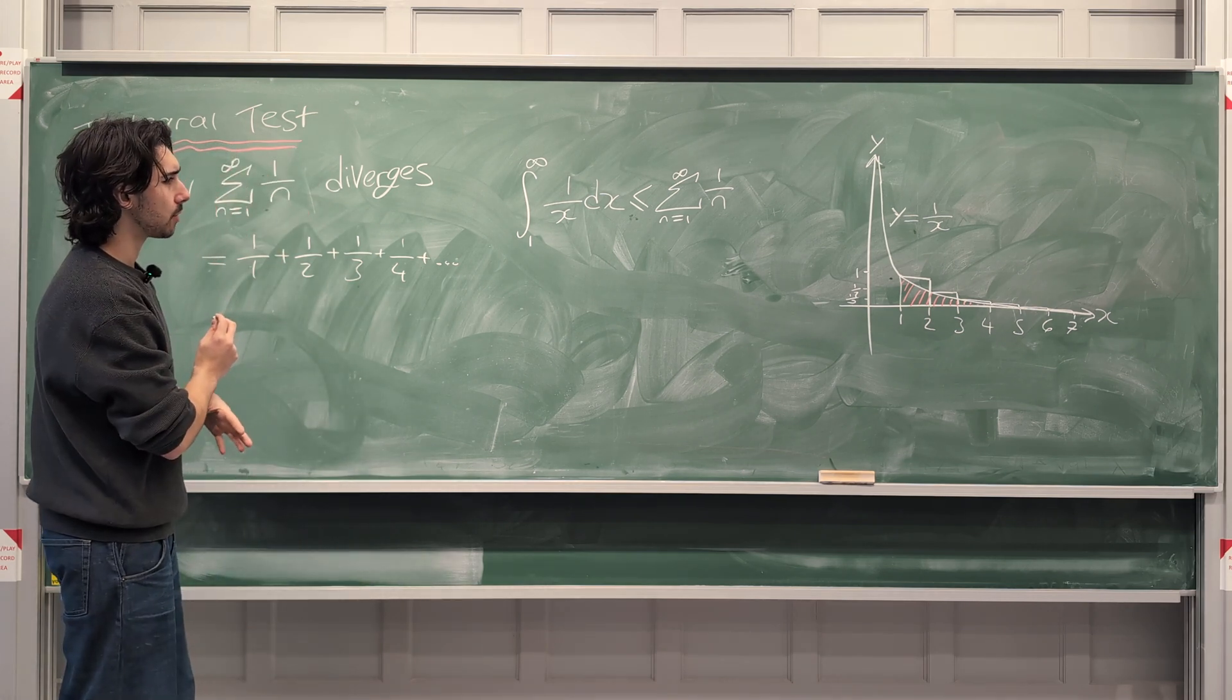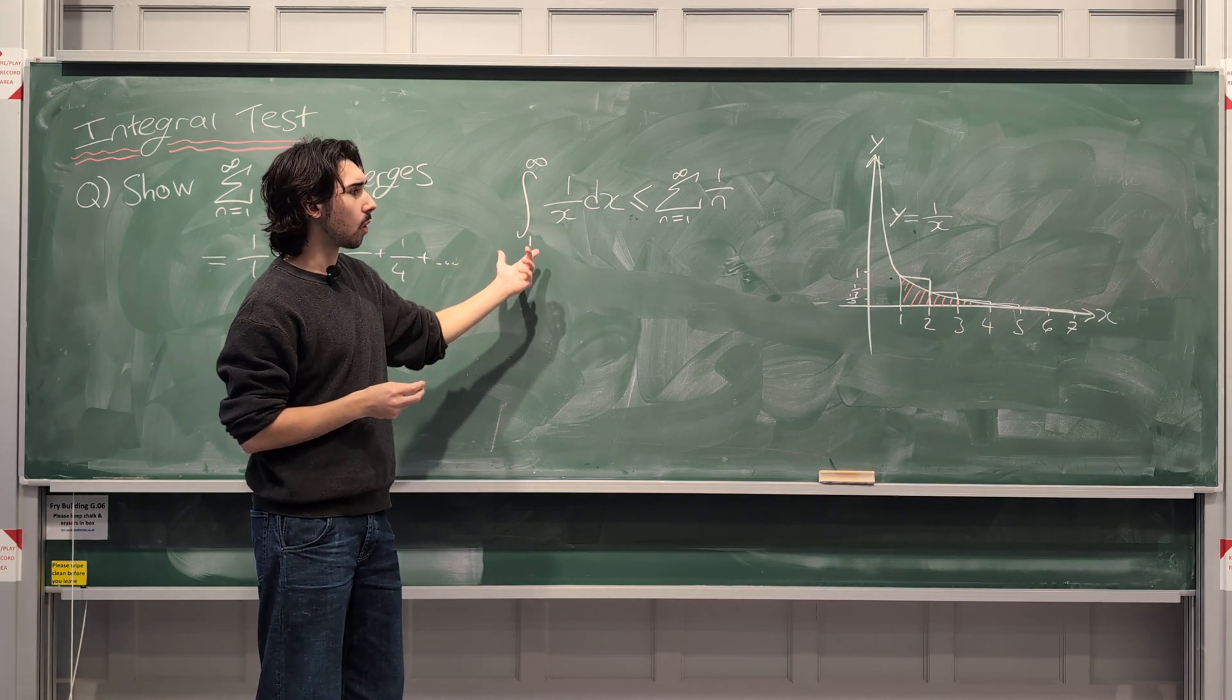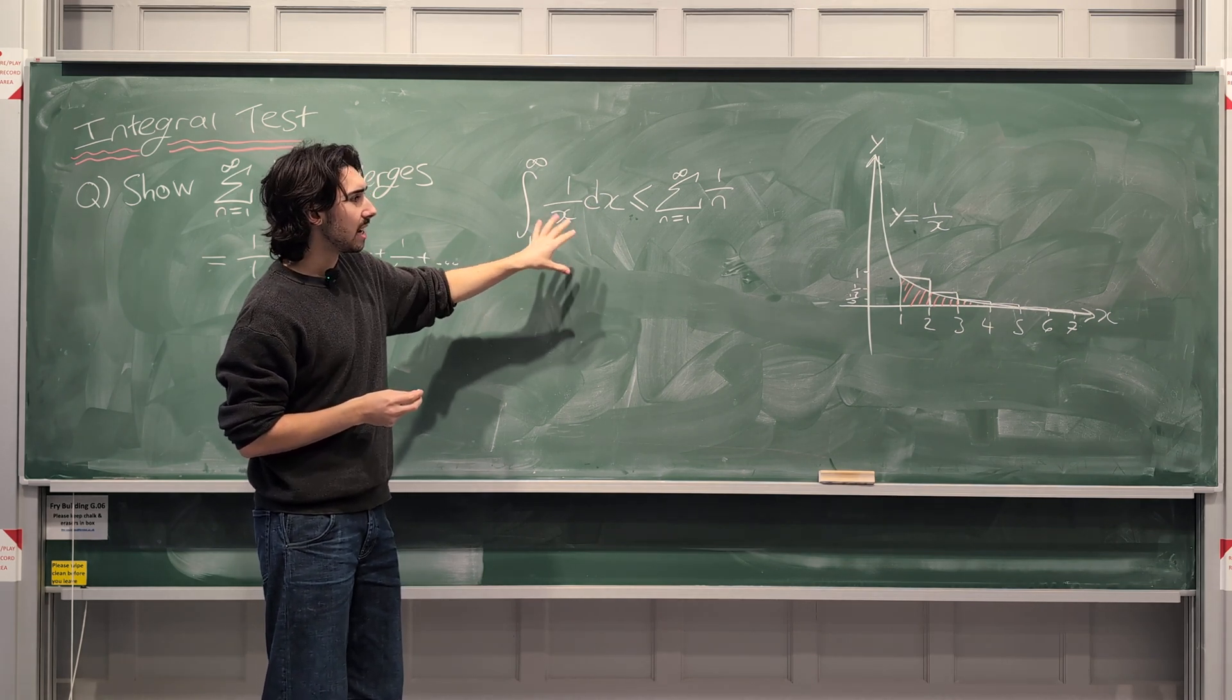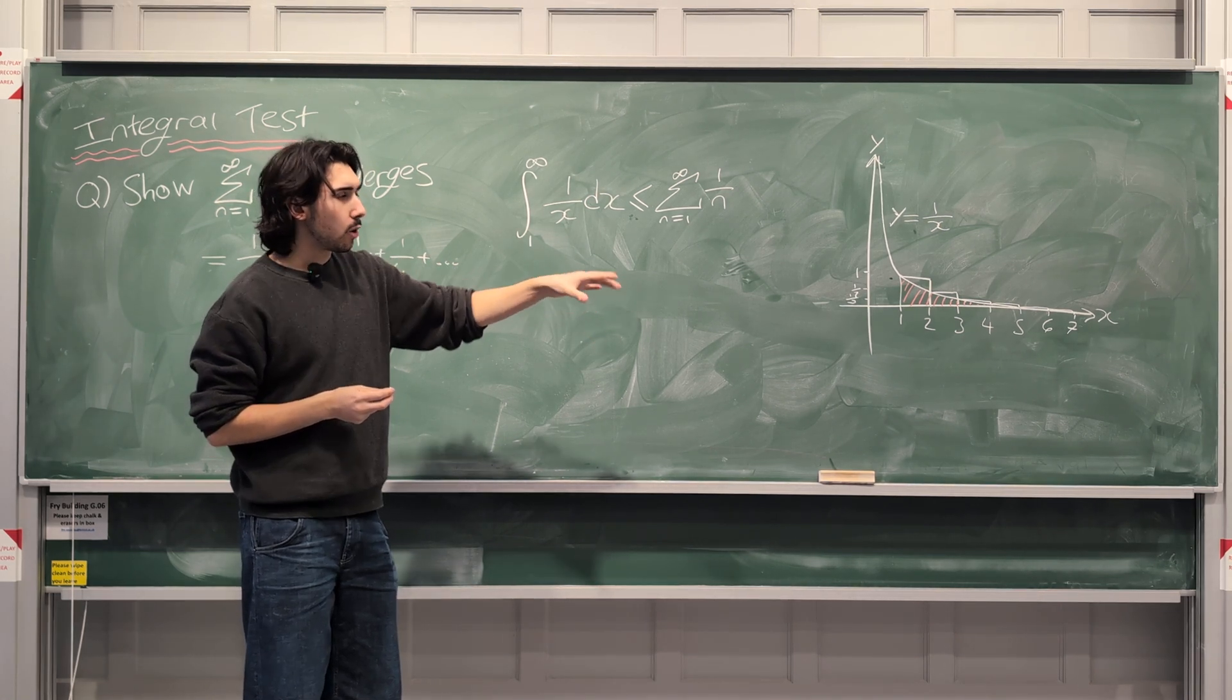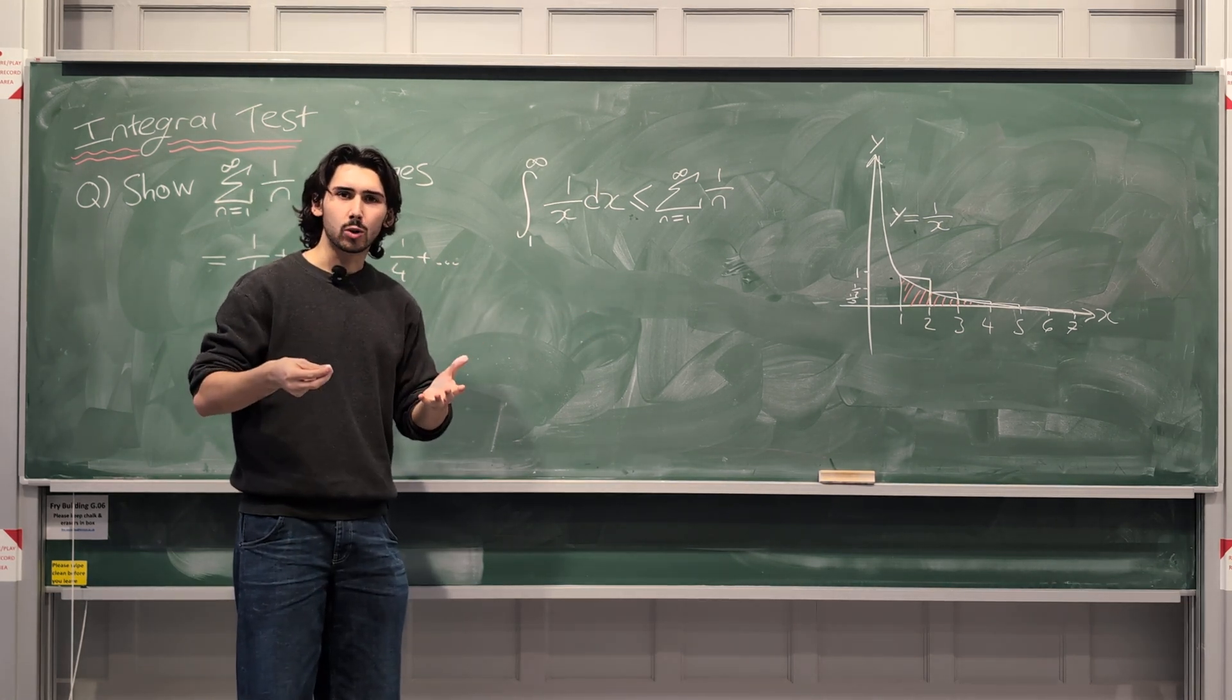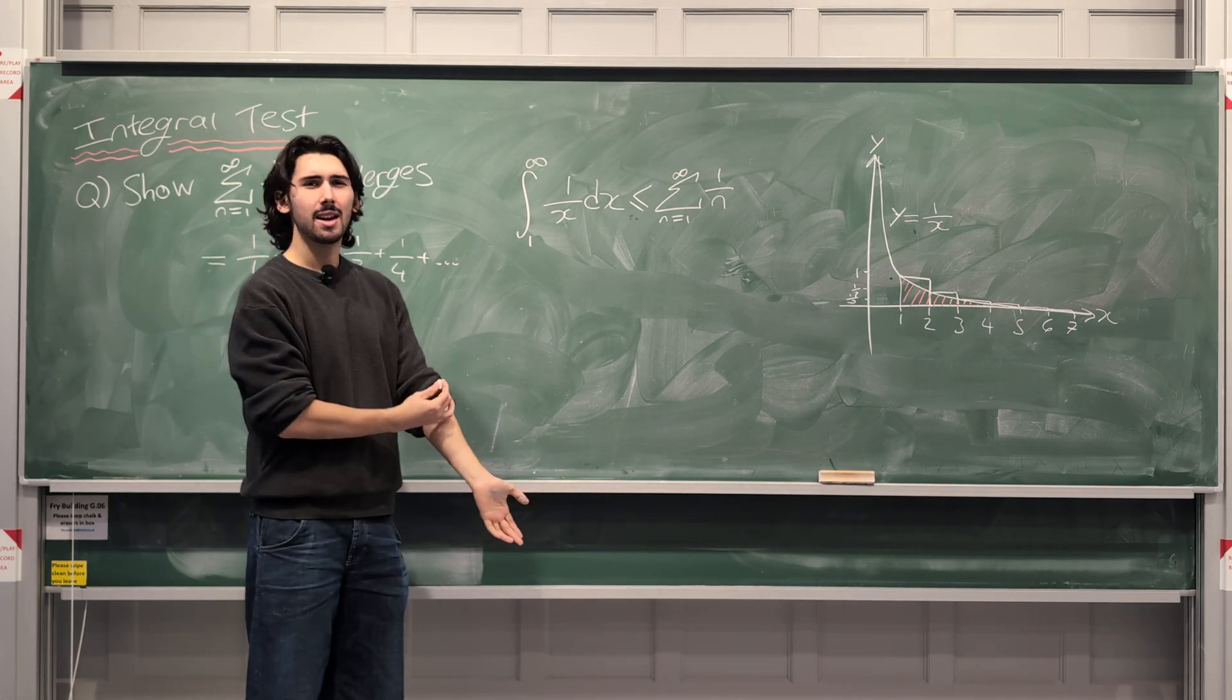Now, guys, all we have to do is work out whether this integral converges or diverges. If this integral diverges, in other words, if the red area is infinite, then the area of all of the rectangles, which is bigger than or equal to infinity, would also have to be infinity.